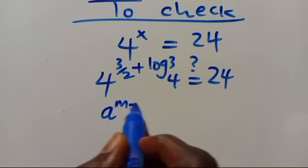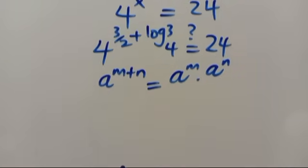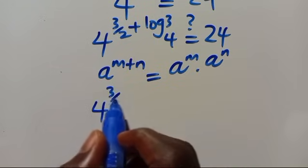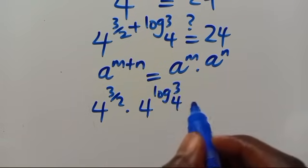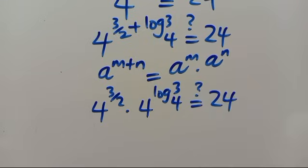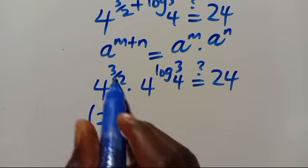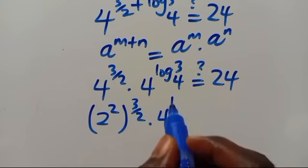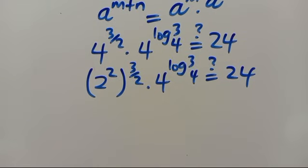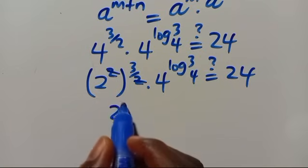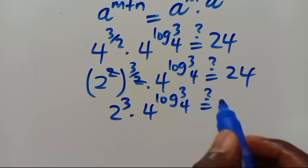Recalling that A to the power of (N plus N) equals A to the power of N times A to the power of N, this becomes 4 to the power of 3 over 2 multiplied by 4 to the power of log 3 in base 4. Writing 4 as 2 squared, we get (2 squared) to the power of 3 over 2, which simplifies to 2 to the power of 3, multiplied by 4 to the power of log 3 in base 4, giving us 24.